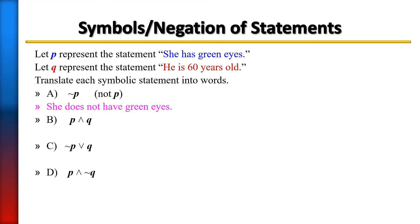Moving on to the next example, this is P and then recall this symbol is AND, so P and Q. That would be 'She has green eyes, and he is 60 years old,' because P is 'She has green eyes' and Q is 'He is 60 years old.'